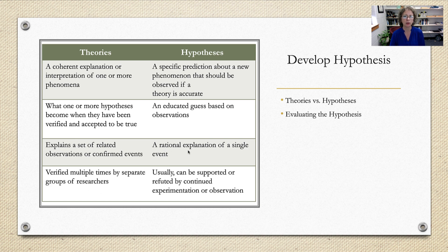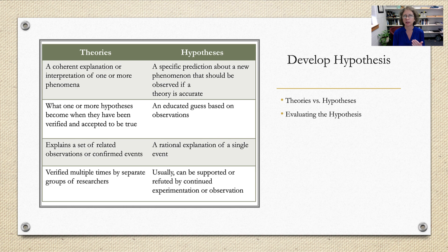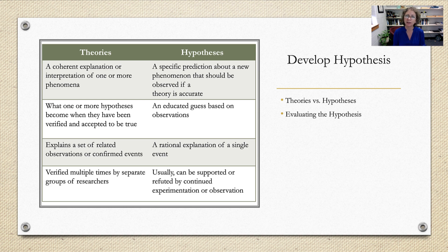A hypothesis is a rational explanation of a single event that hasn't been replicated yet, and it can be supported or refuted by continued experimentation or observation. If replication studies sometimes confirm and sometimes don't confirm the hypothesis, there's something else going on — either the hypothesis isn't the best test of the theory, or the theory needs to be updated. That cyclical nature of theory development involves: observation, developing the theory, testing it, and refining it.